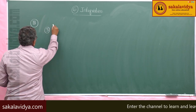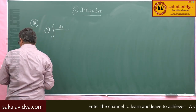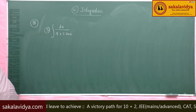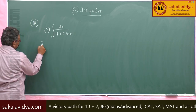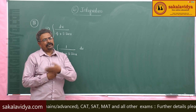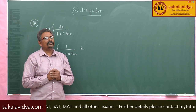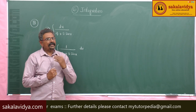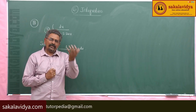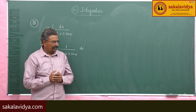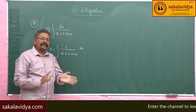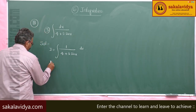Evaluate the integral dx by (4 plus 5 sin x). Let us consider I is equal to integral 1 by (4 plus 5 sin x) dx. This is in the form of integral 1 by (a plus b sin x) dx. If the integrals are of the form 1 by (a plus b sin x), or 1 by (a plus b cos x), or 1 by (a cos x plus b sin x) dx, it is better to substitute tan(x/2) equal to t.